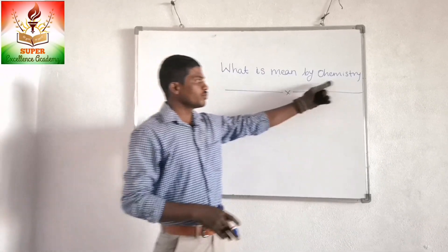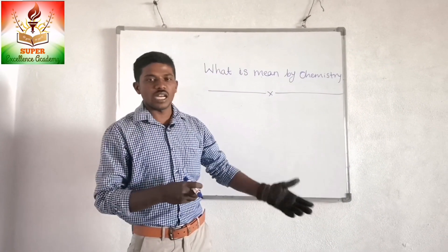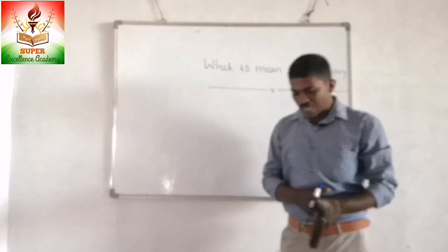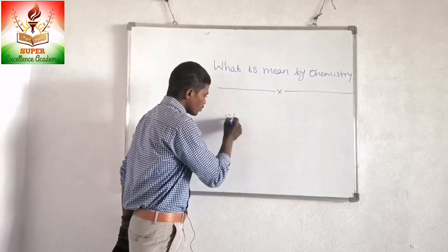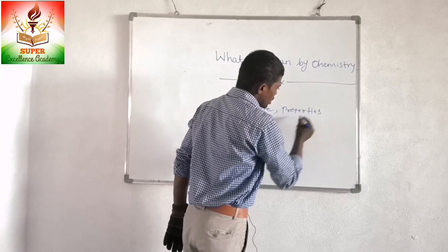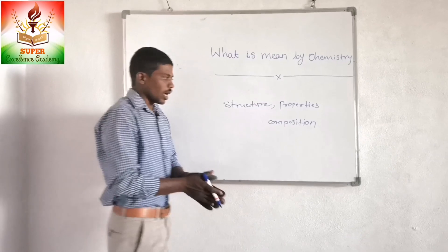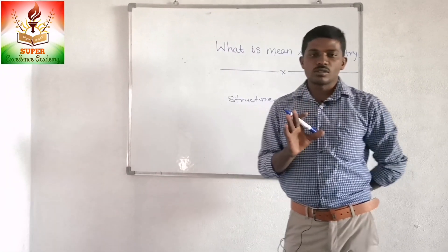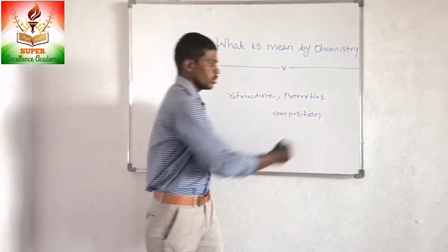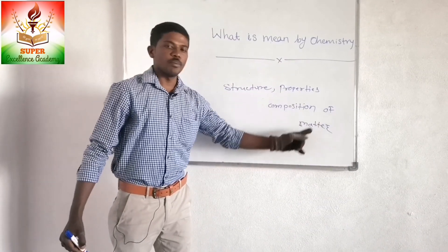What is the meaning of chemistry? Chemistry is the science of the science. The structure, properties, and composition of the matter — the branch of science which deals with the study of structure, properties, and composition of matter are called chemistry.